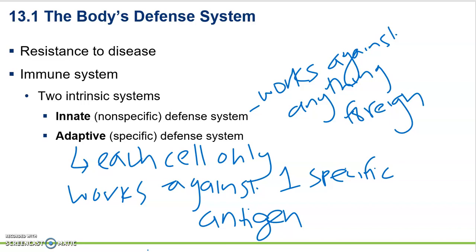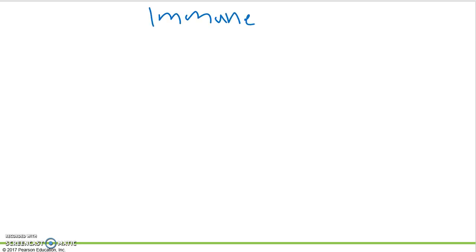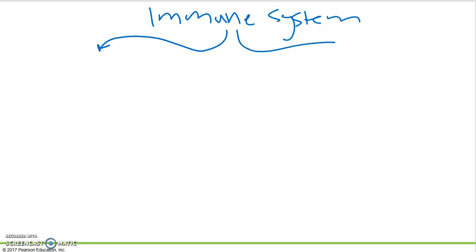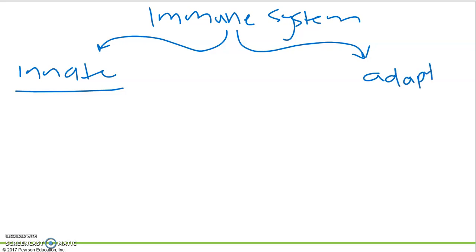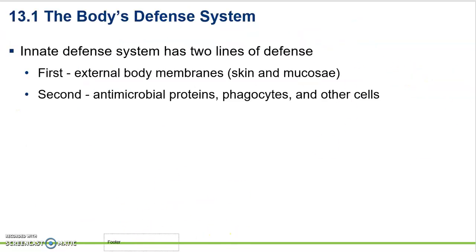I like to keep a running list of the divisions of the immune system. So let's start with the immune system — you're going to want to start this on a page that you have access to, and we'll add to it as we go through the parts. We've got our innate, which is going to have more branches and take up more space, and then we have the adaptive on the other side.